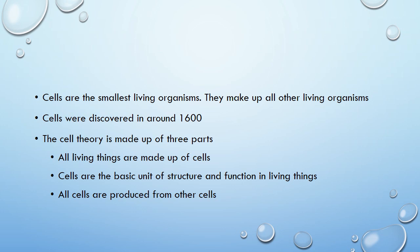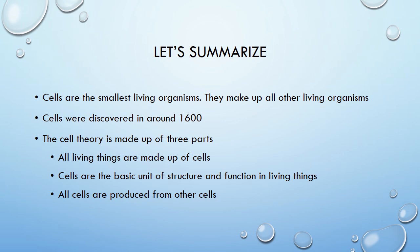As a summary: cells are the smallest living organisms. They make up all other living organisms. They were discovered around 1600, and it was a long process to really realize what cells actually mean and for scientists to recognize this was a big deal. Cell theory is made up of three main parts: all living things are made of cells; cells are the basic unit of structure and function in living things; and all cells are produced from other cells. I hope you enjoyed your first online lecture — if anything is confusing, go back and re-watch that part.